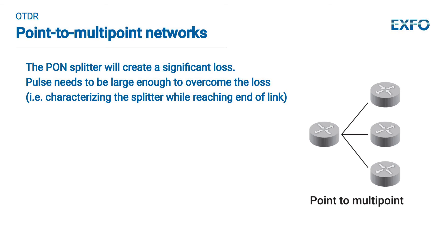For point-to-multipoint networks, the PON splitter will create a very significant loss. The light is split into equal parts depending on the splitter ratio, so each individual branch has, in a 1 by 32 splitter, only 1/32nd of the total power — a huge loss for any OTDR test. The pulse should therefore be large enough to overcome this big loss, to characterize the splitter while reaching the end of the link.